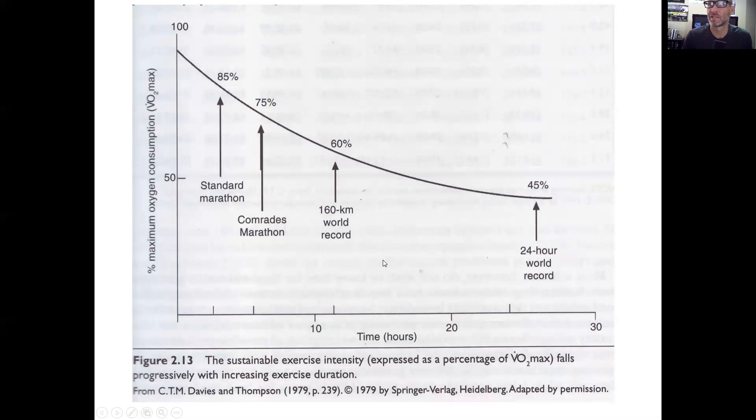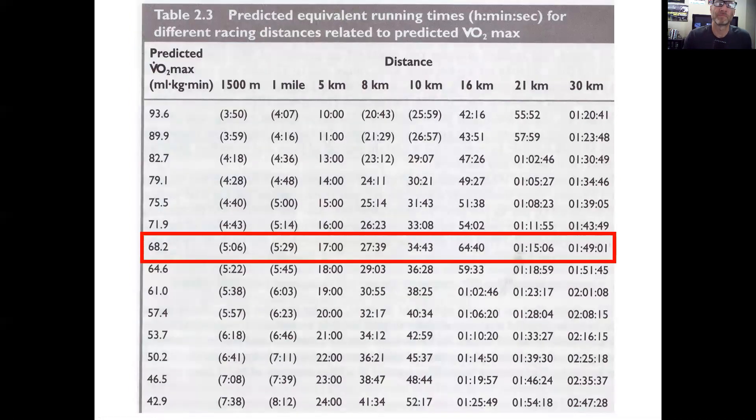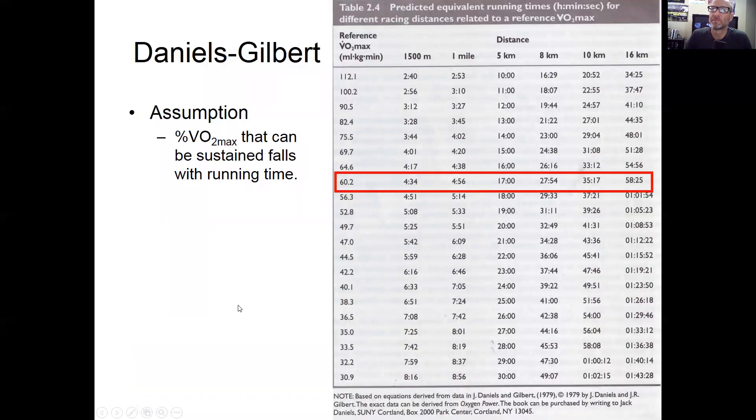Now I've already said in other videos VO2 max alone is not a great predictor of performance, but here's a prediction table based upon this type of concept. If you know your VO2 max is 68.2, then you can predict different performances off of that. So we look at a 17-minute 5K - that would translate to a 34:43 10K if you were able to sustain that same pace. But you're not able to, so the 34:43 accounts for that. 21 kilometers is a half marathon, and so forth. The assumption is that the percent VO2 max that can be sustained falls with running time, not only pace.